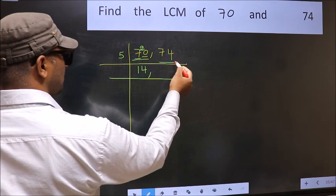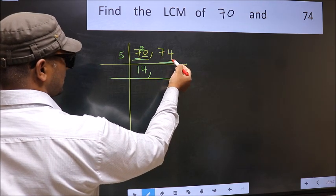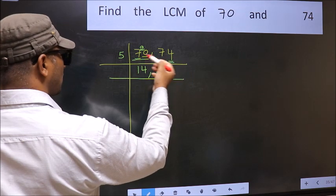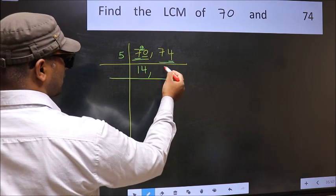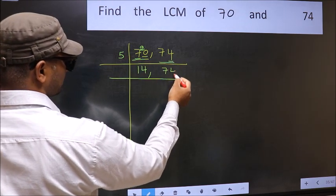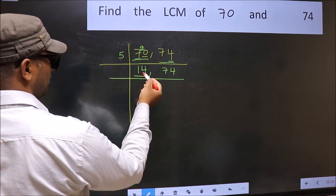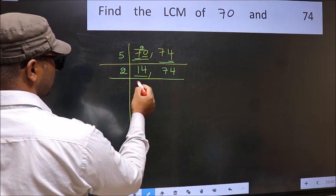Now the other number 74. Last digit is neither 0 nor 5, so this is not divisible by 5 so you write it down as it is. Now here we have 14. 14 is 2 sevens.